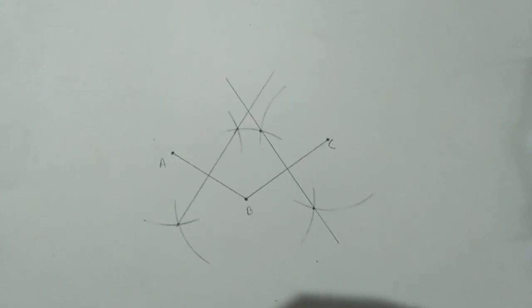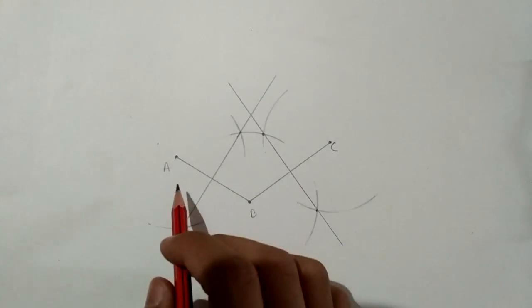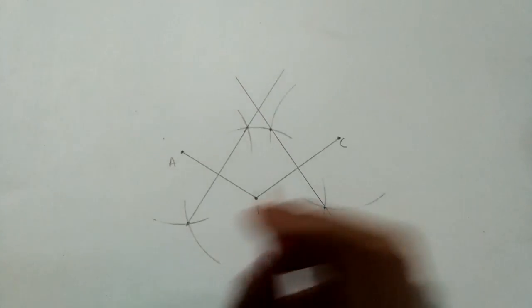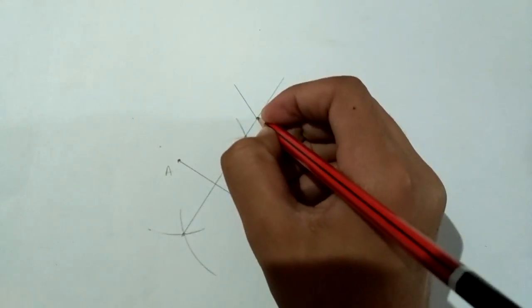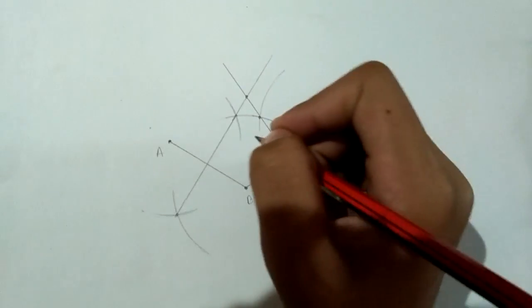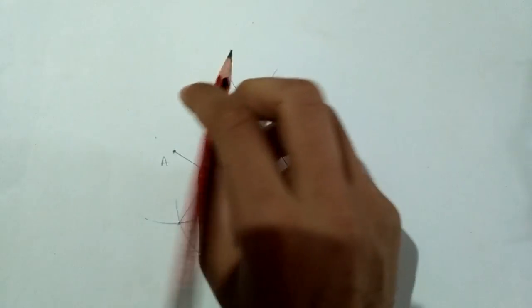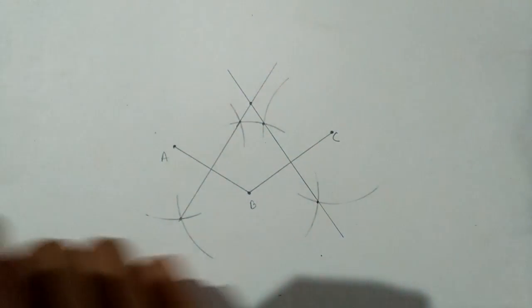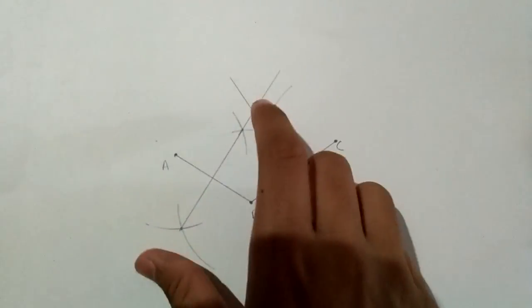The point of intersection of the bisectors of line segments AB and BC is the center. So this point we got is the center. Now we will construct the radius.